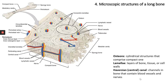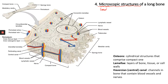Hey guys, welcome back to the second part of the skeletal system. This is Dr. Yu. So the first thing we're going to look at is the microscopic structures of a long bone. Micro means small, so this is very different than the gross structures that we talked about in the first part of the video.